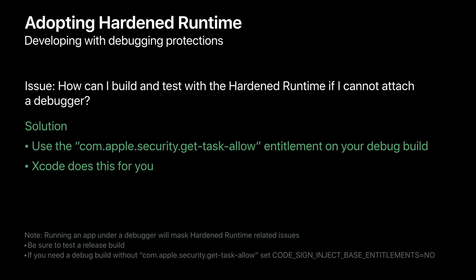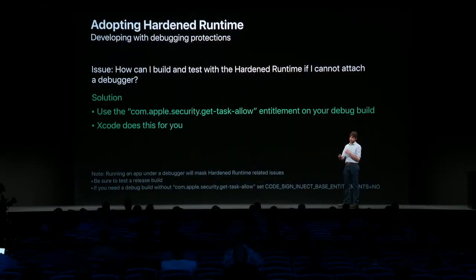If you need to make a debug build without getTaskAllow through Xcode, you can use the CODE_SIGN_INJECT_BASE_ENTITLEMENTS=NO option in your Xcode project to get all of your debug settings except getTaskAllow.